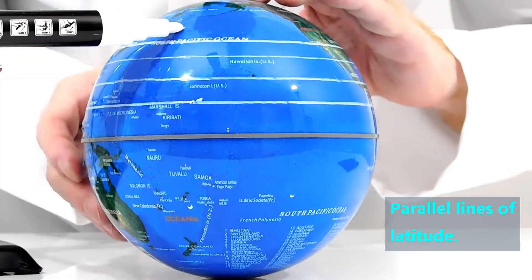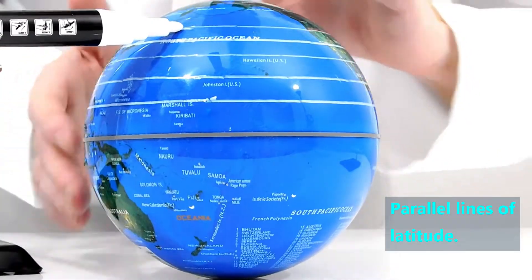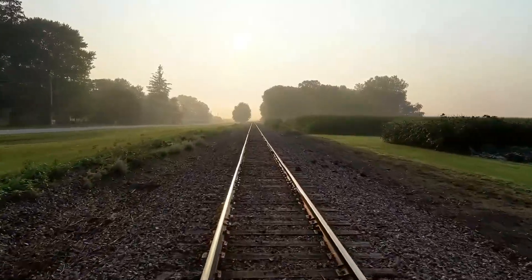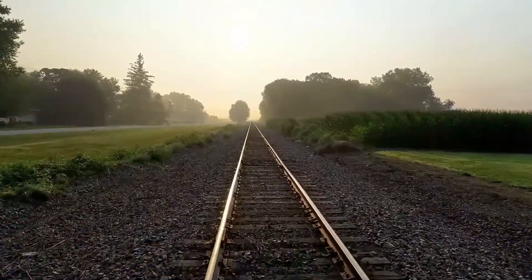As a reminder, the word parallel means when one or more lines or other objects maintain an equal distance to each other. A classic example of parallel lines are railroad tracks. They always keep an equal distance from each other.